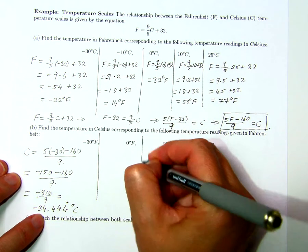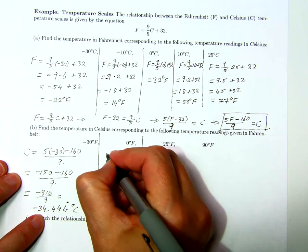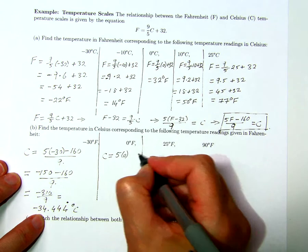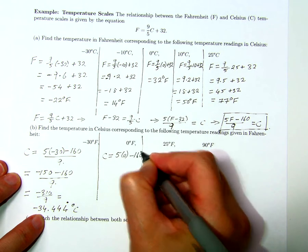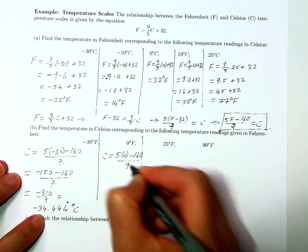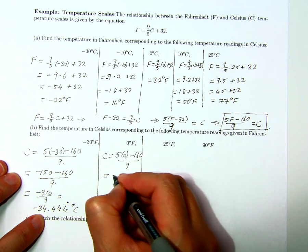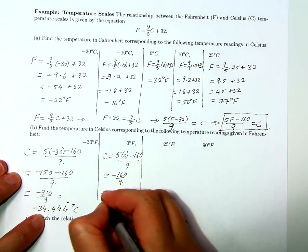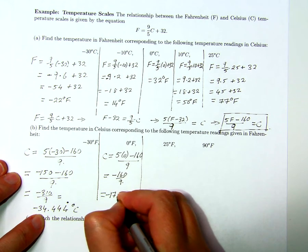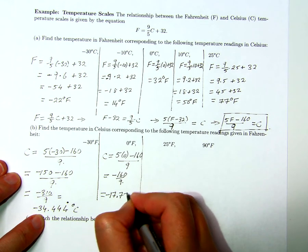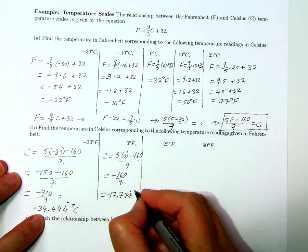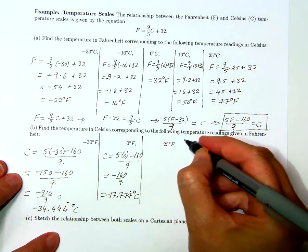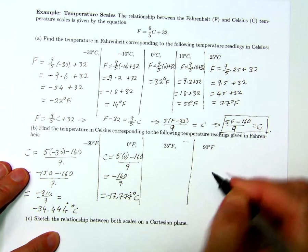When Fahrenheit is at 0, Celsius is 5 times 0 minus 160 over 9, and that's equal to negative 160 over 9, which is negative 17.777... — those 7's go on forever. That's the Celsius reading when we're at 0 degrees Fahrenheit.